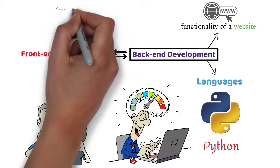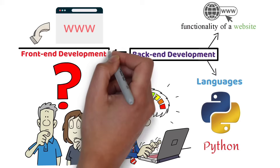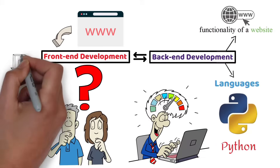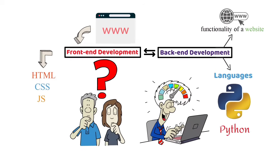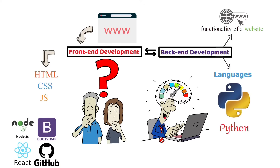However, the look of the website is made with front-end development programs. Front-end development is a combination of HTML, CSS, and JS, along with a load of other programs such as Bootstrap, Node.js, GitHub, React, and more.